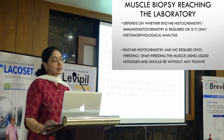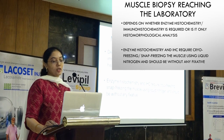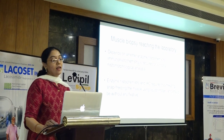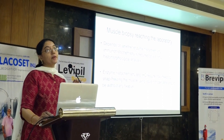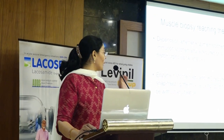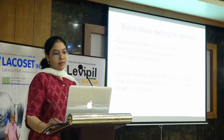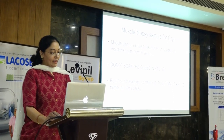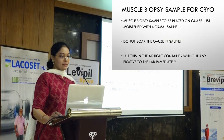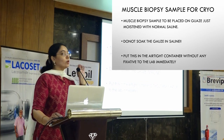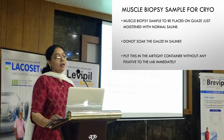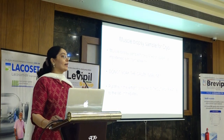If it is enzyme histochemistry and IHC, it requires a fresh sample — fresh muscle biopsy — because we are going to cryo-freeze it using liquid nitrogen at minus 70 degrees centigrade. This should not have any fixative. Not even a vapor of formalin has to come in contact with the muscle, because the enzymes are really sensitive to formalin. Even a little vapor of formalin can actually give false negative results. We expect the sample in the following way: the muscle biopsy has to be placed on gauze moistened with just one or two drops of saline — it should not be soaking in saline — and placed in an airtight container without any fixative, and has to reach the lab immediately.